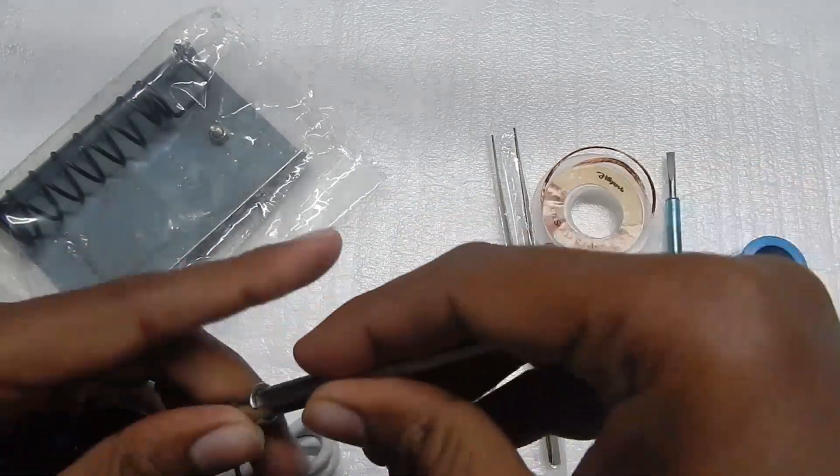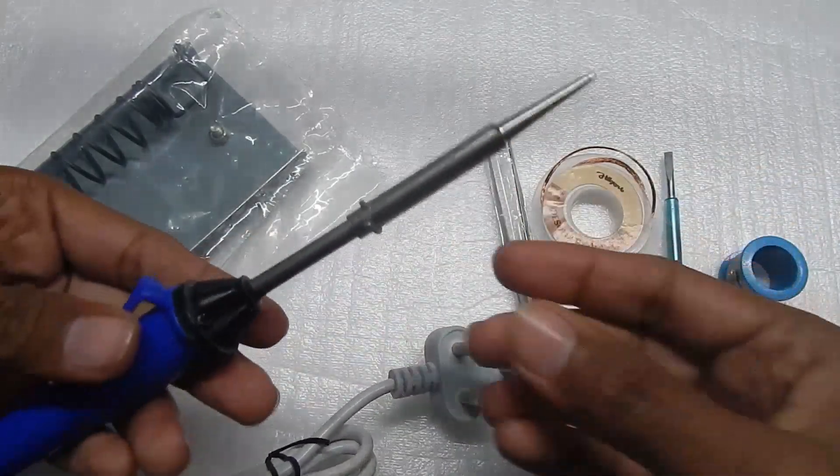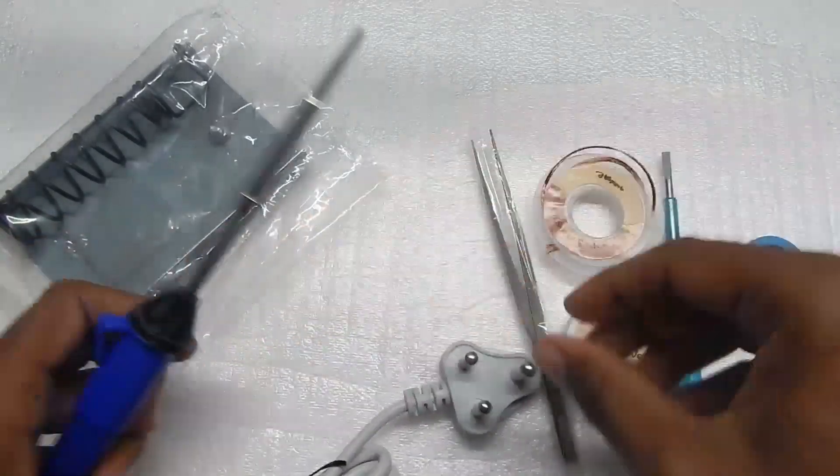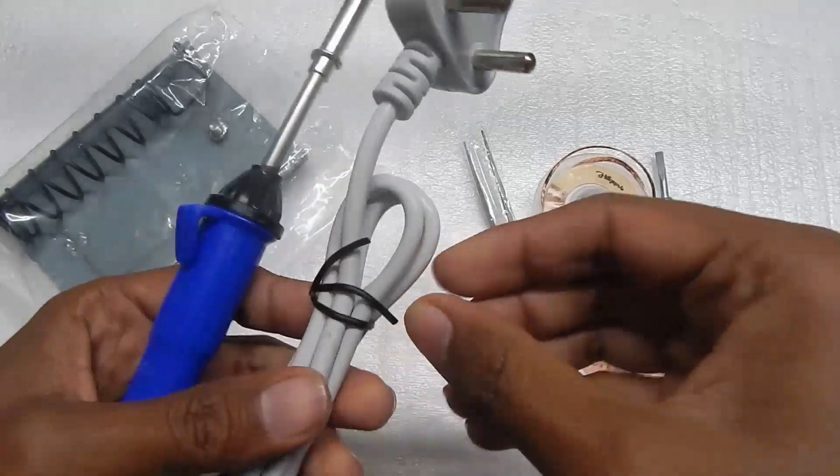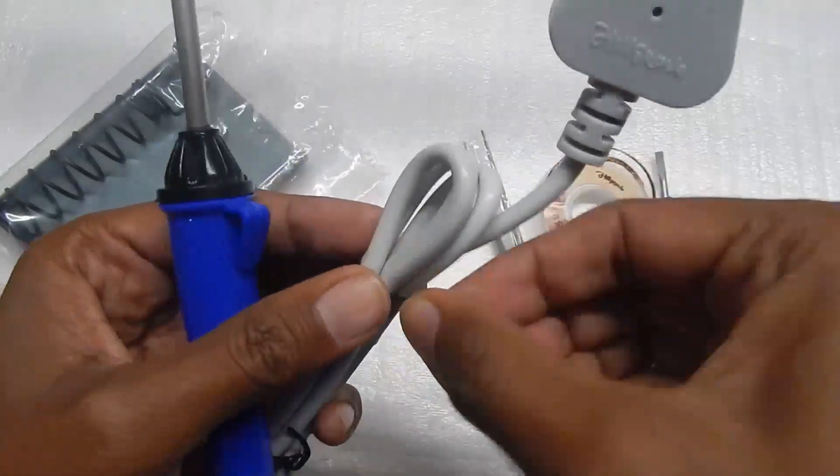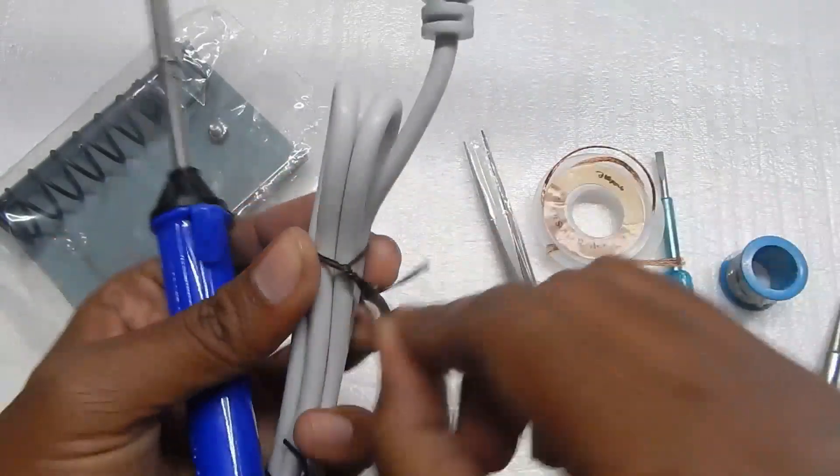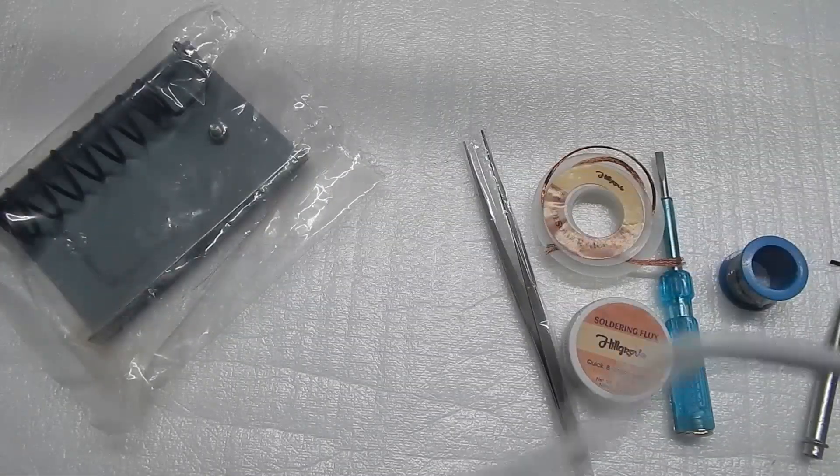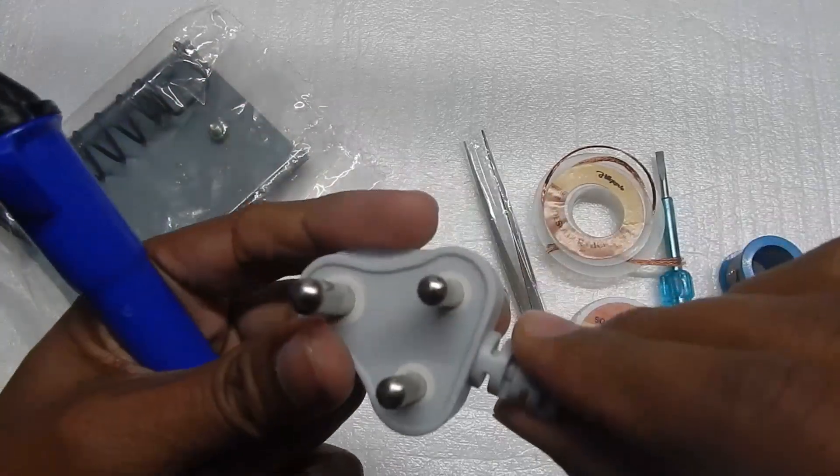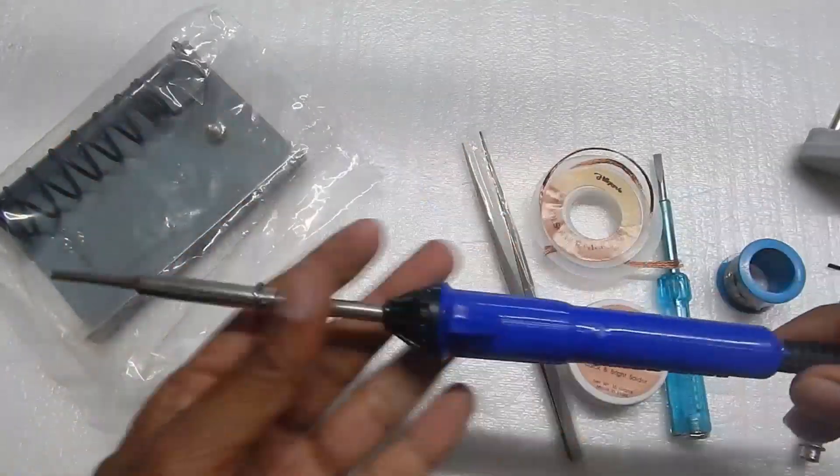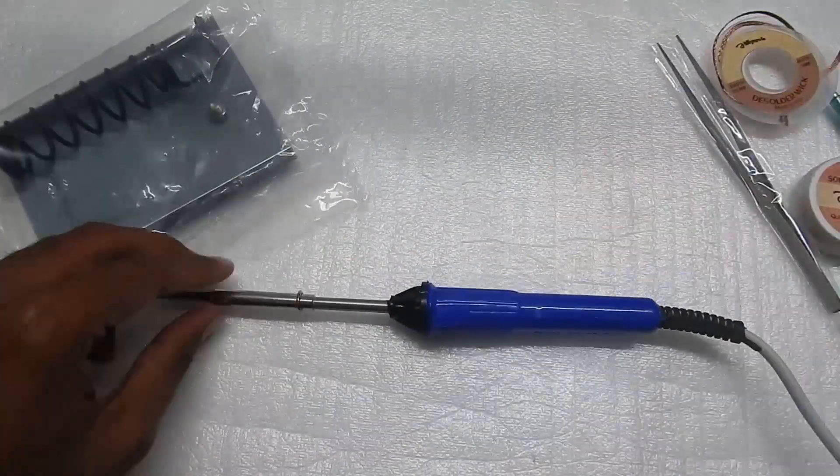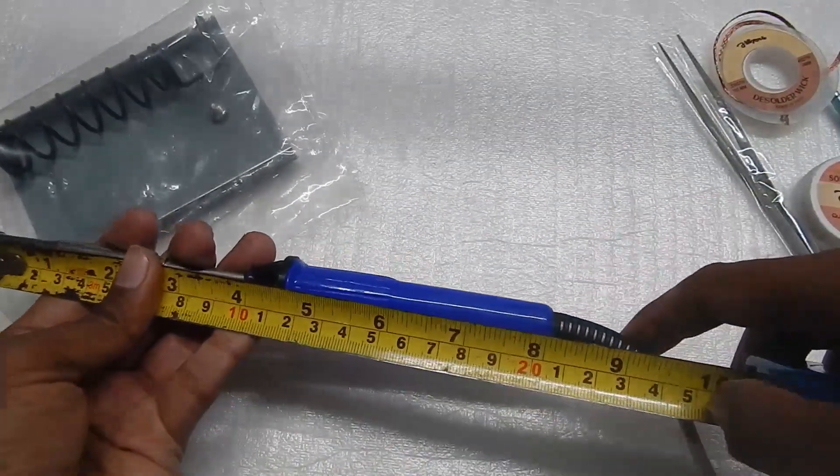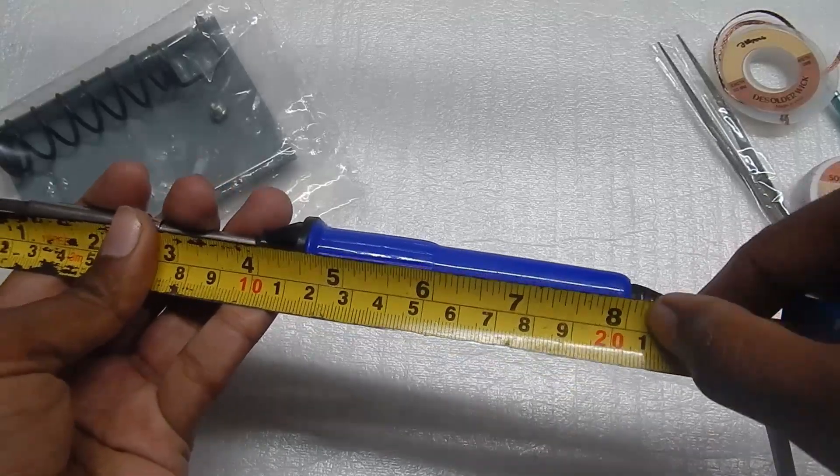Let's measure the cable length. It's about one meter long with a three pin plug. If I measure the soldering iron with a scale, the length is about eight inches or 20 centimeters.